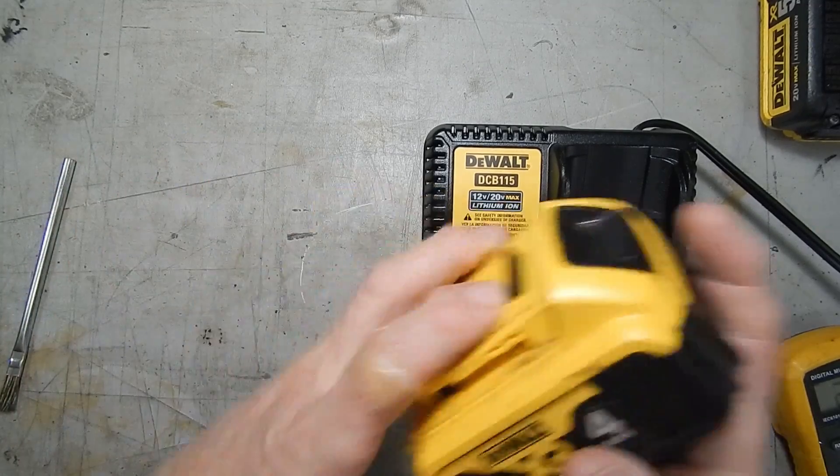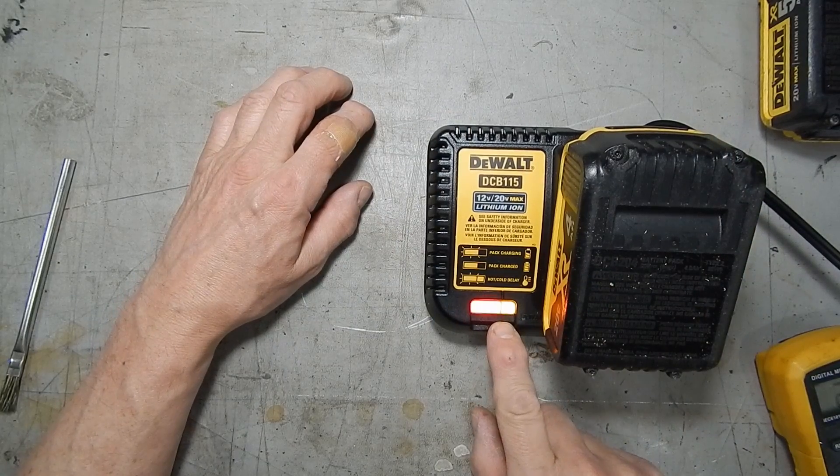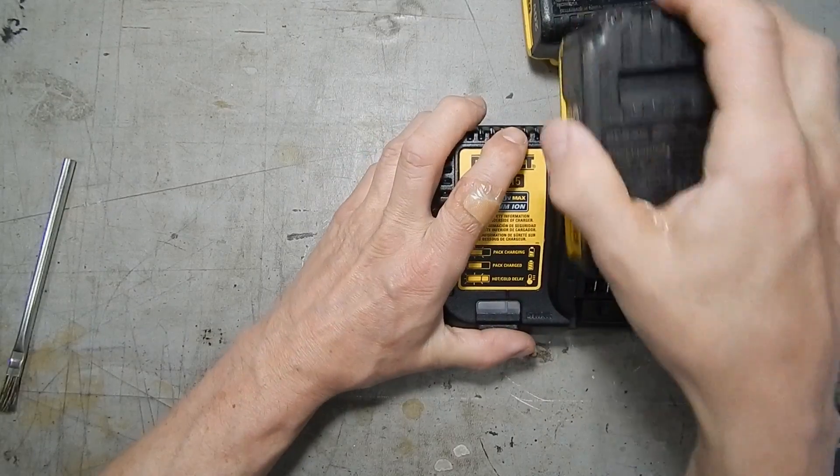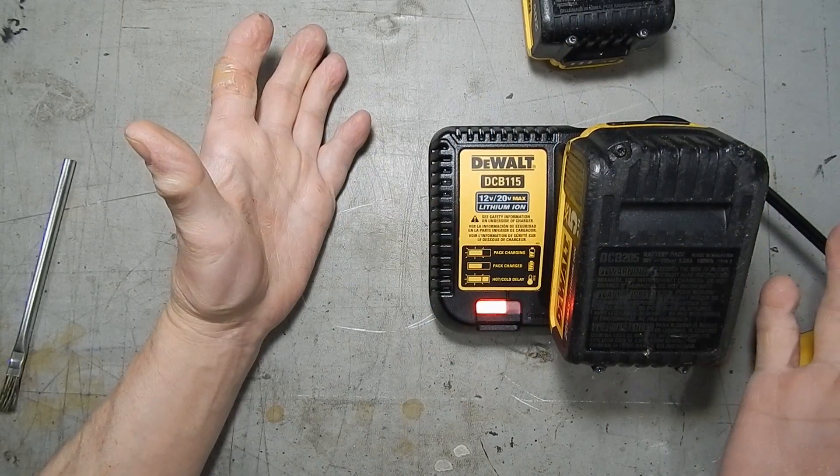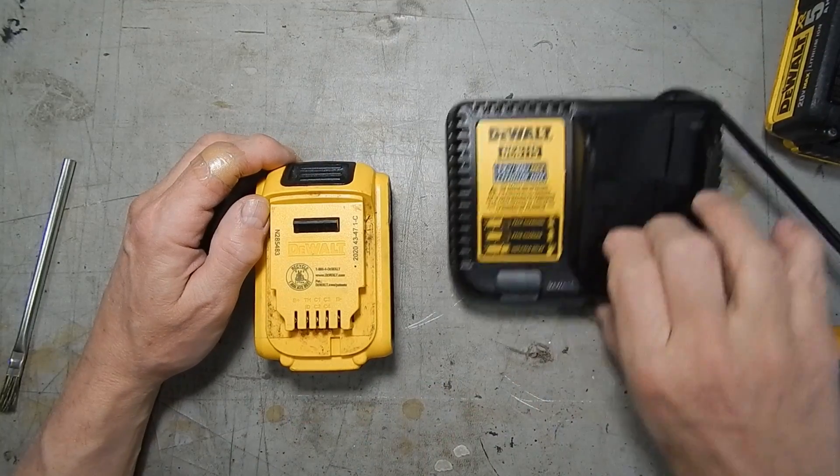I've got a Dewalt battery pack that when I put it on the charger it says hot cold delay always, no matter what I do. Other battery packs work fine on the charger, so let's open it up and see if we can figure out what's wrong with it.